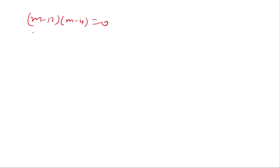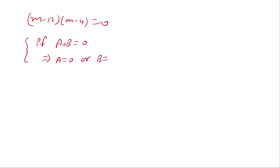Now the product of two expressions is 0. We know that if a times b equals 0, this implies a equals 0 or b equals 0. So here we can say m minus 12 equals 0 or m minus 4 equals 0.